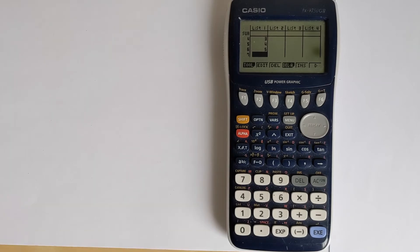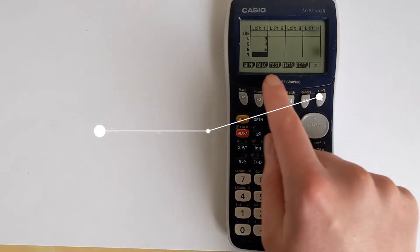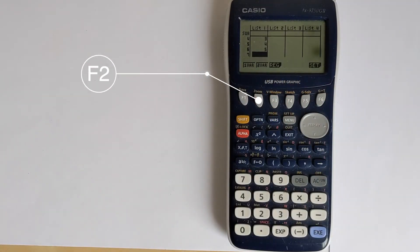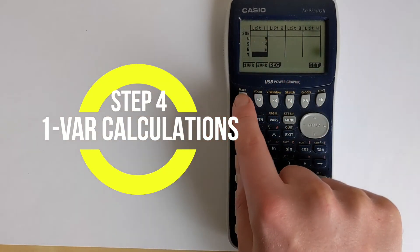So we need to now navigate to the correct calculation menu. Press F6 to go back, then we've got CALC for calculations, and then it's got some options. We've only got list 1, so we're looking at one variable calculations.